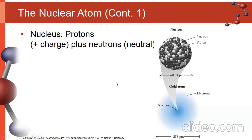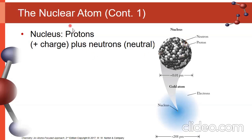Pictorially, if the entire gold atom is about 288 picometers across, the nucleus would be represented by about one one-hundredth of one of those picometers — roughly one twenty-nine-thousandth of the diameter. So we have a very large atom with a very tiny nucleus, but inside that nucleus both neutrons and protons are present at the same time.